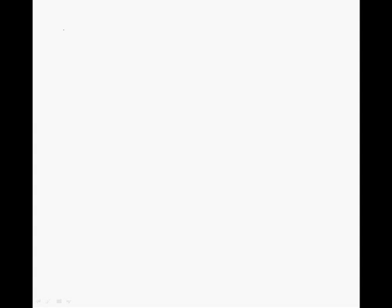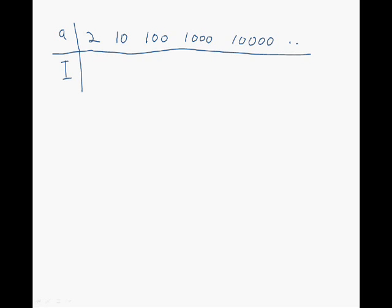And the next step is to build a table. So we have a and i. And we're going to use values for a equal to 2, 10, 100, 1000, and if we wanted we could continue, but we're going to stop at 10,000. And we're going to find the corresponding values for i. Let's just remind ourselves what i is. So i is the integral from 1 to a, 1 over x squared dx.